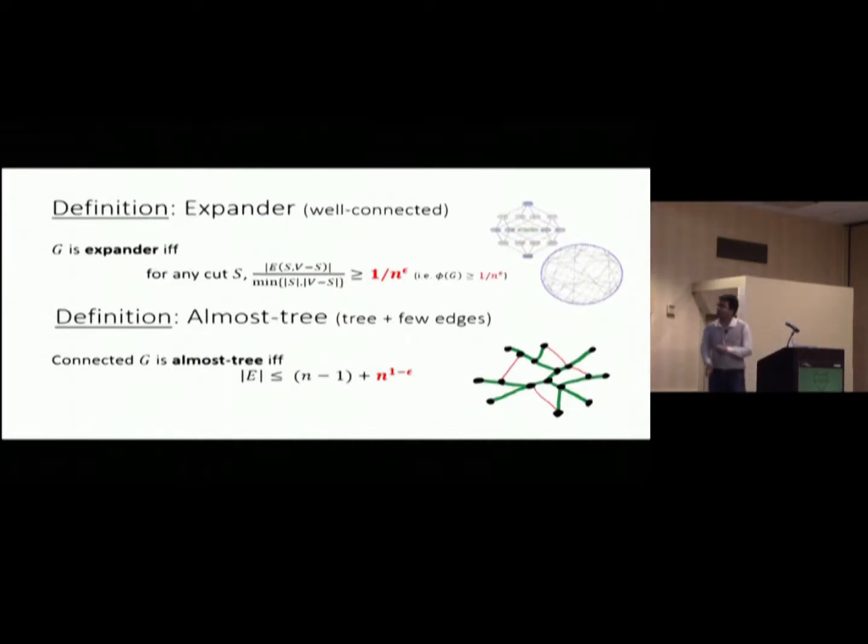So, here I said that the graph is expander. This is kind of a relaxed definition. The graph is expander if you look at any cut, and the number of edges crossing the cut over the size of the cut on the small side, it's large. Not constant, but quite large. So, think of epsilon is some very small constant. For almost tree, we said that the connected graph is almost tree, if the number of edges is at most this, n-1, which is number of edges in the tree, and something sub-linear. Okay? So, if you have heard about outer sparsifier, this is one kind, it is one specific instance of almost tree.